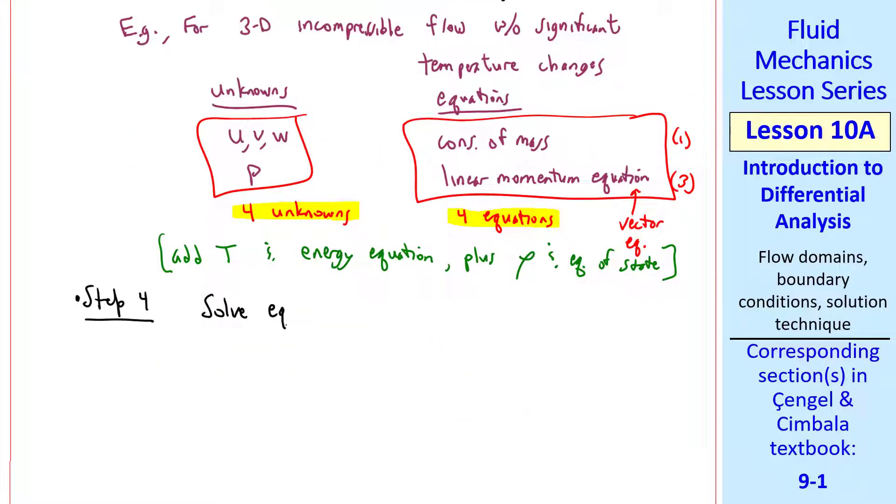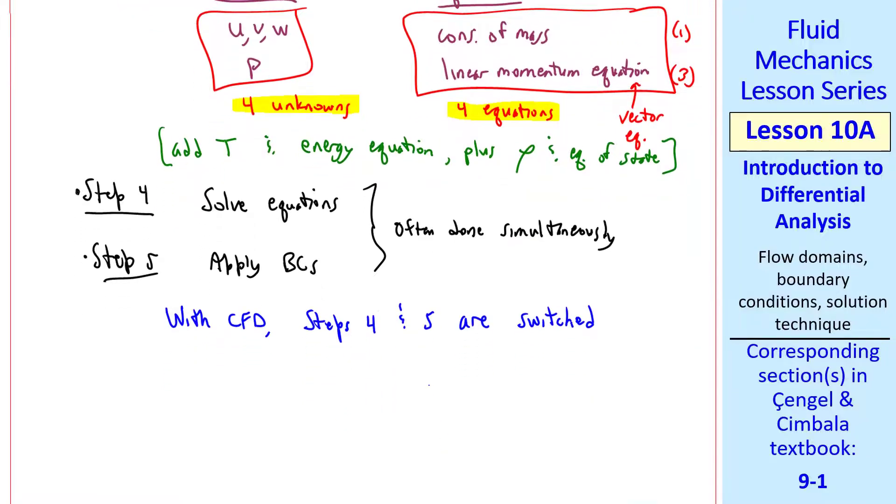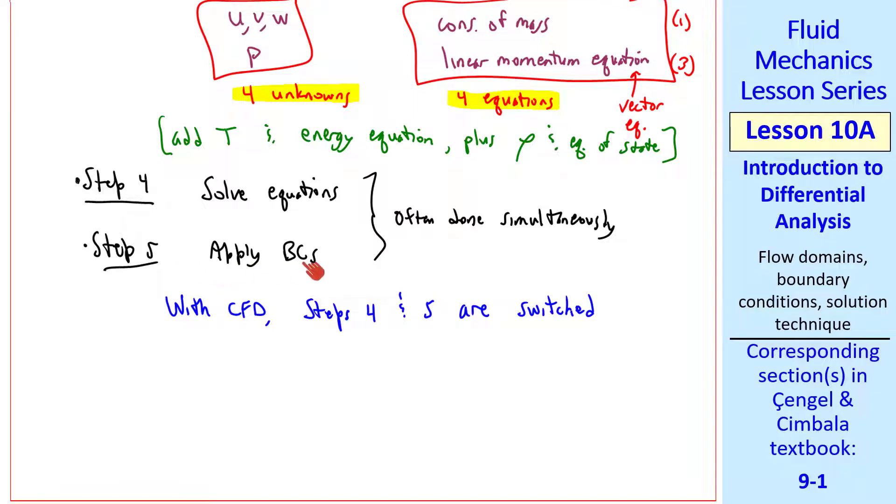Step 4 is to solve the equations. You solve the differential equations, which involve some sort of integration. Step 5 is to apply the boundary conditions. These two steps are often done simultaneously. When you're using CFD to solve these equations, steps 4 and 5 are actually switched. In other words, we apply boundary conditions and then solve the equations.